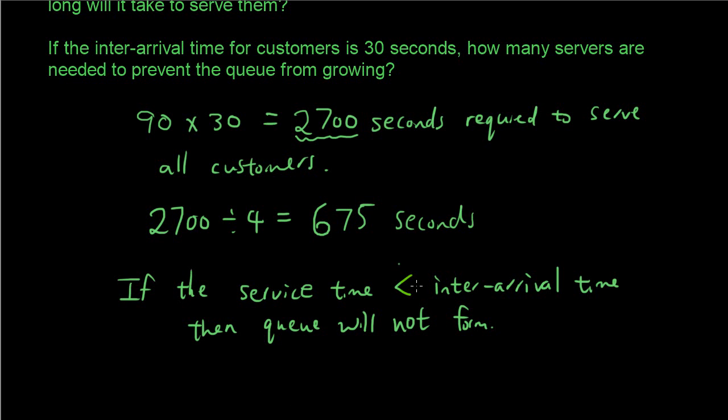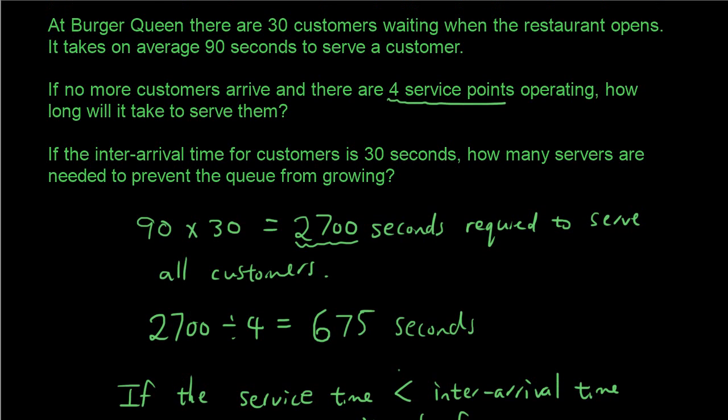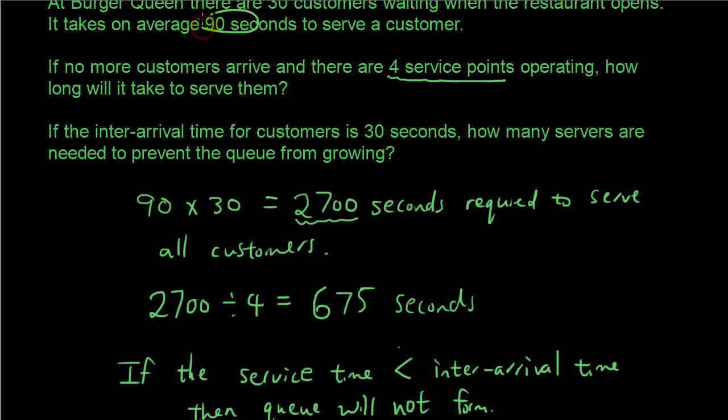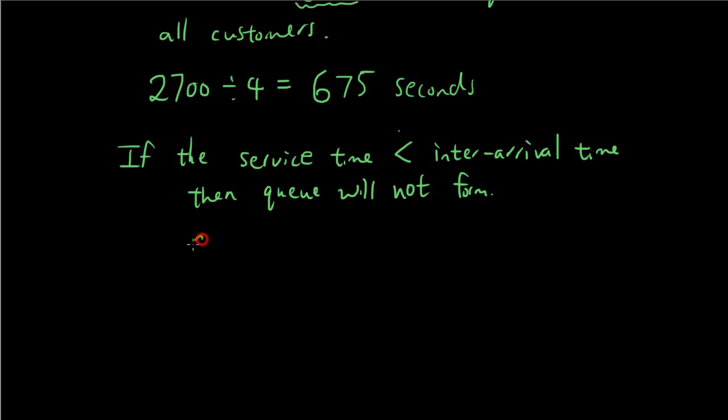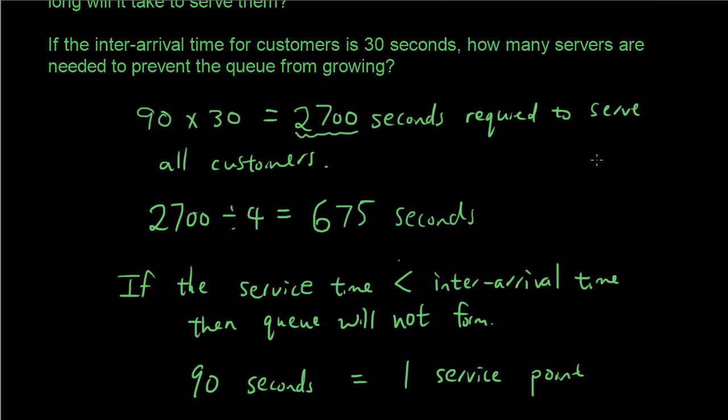So, what that means is, the service time right now is 90 seconds, because it says 90 seconds here. So, 90 seconds is the service time for one service point. Now, we need the service time to be smaller than 30 seconds, because according to this condition, if the service time is 90 seconds, which is a lot bigger than 30, then the queue will start, the queue will grow.